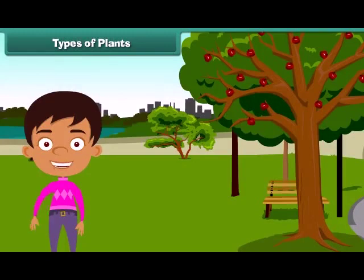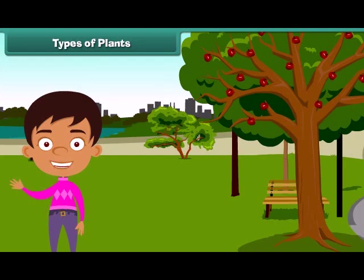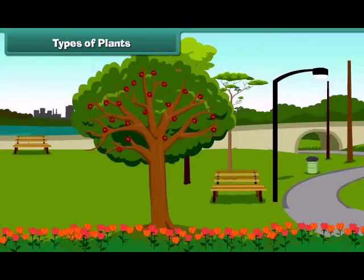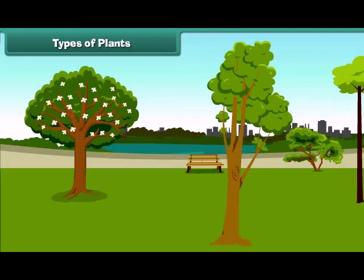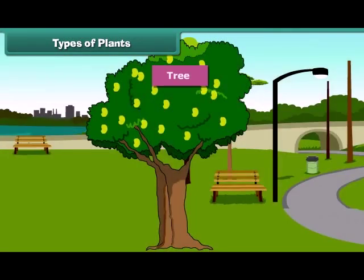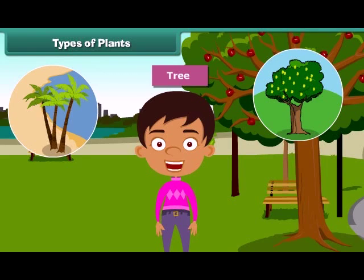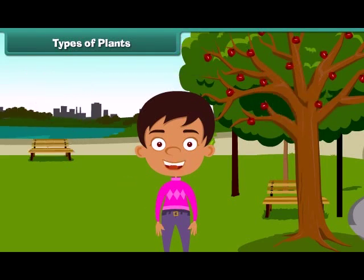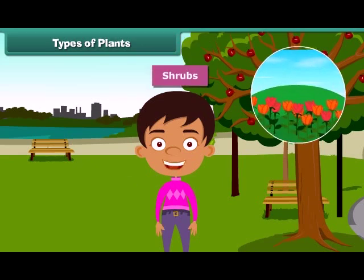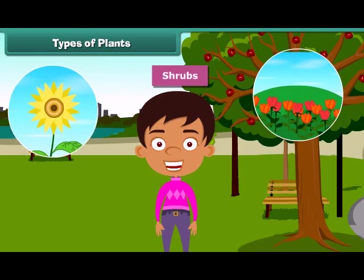Children, we often see different types of plants around us. We find that some of the plants are tall while some are small. Plants which are very tall and strong are called trees. For example, mango tree, coconut tree, and neem are tall. Plants which are smaller than trees are called shrubs, such as rose and sunflower plant.